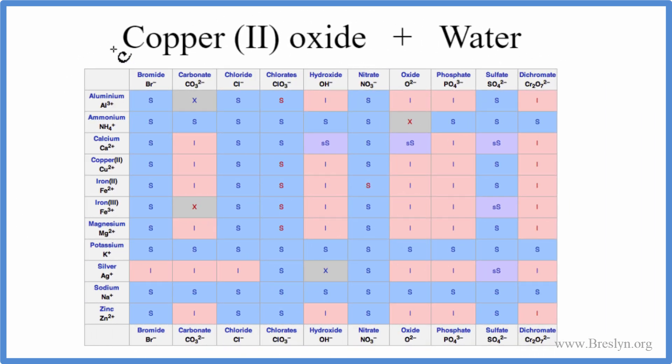So here's our solubility table. These are the positive ions. We're looking for copper 2, so Cu2+. That's Cu2+ right there.